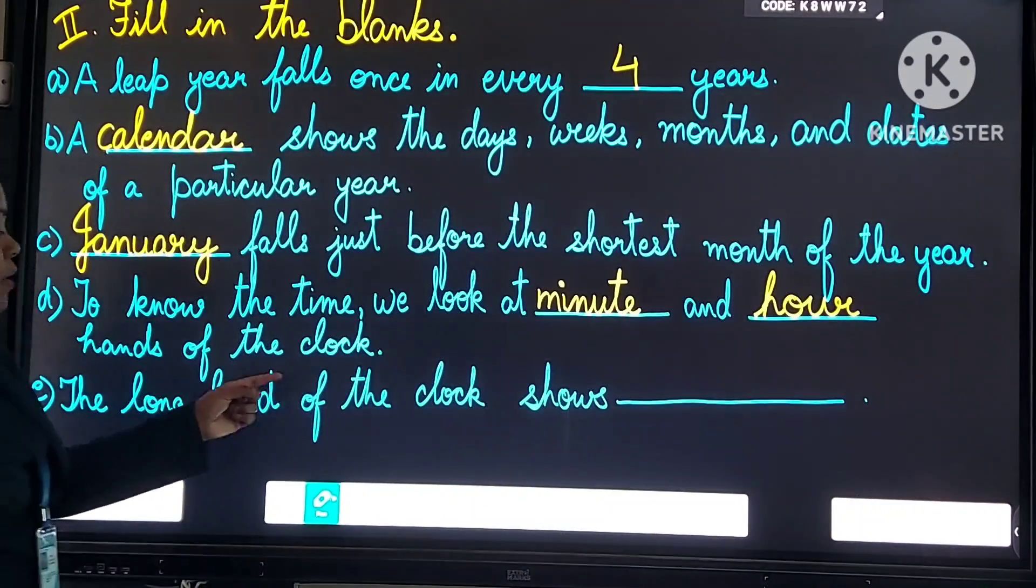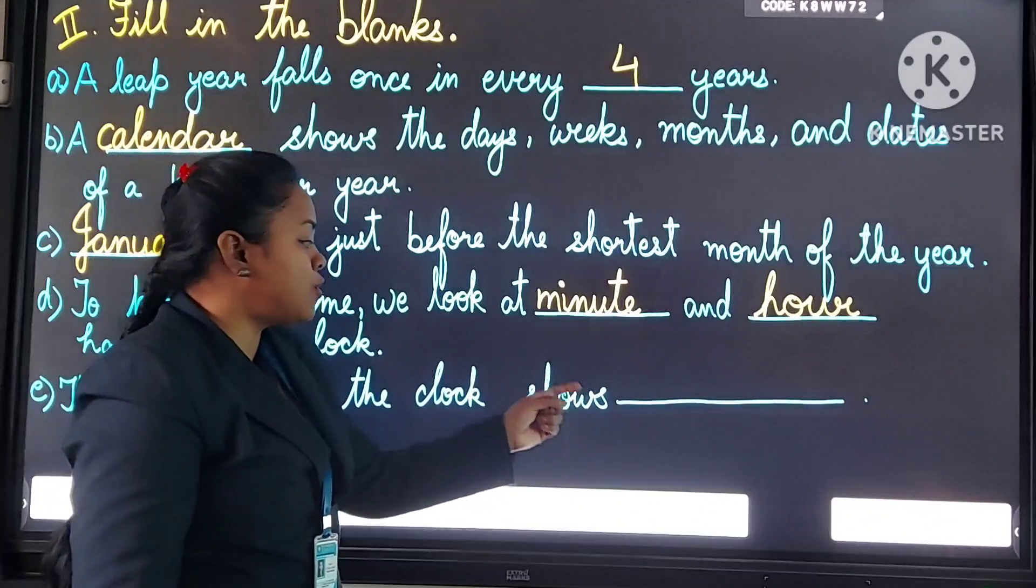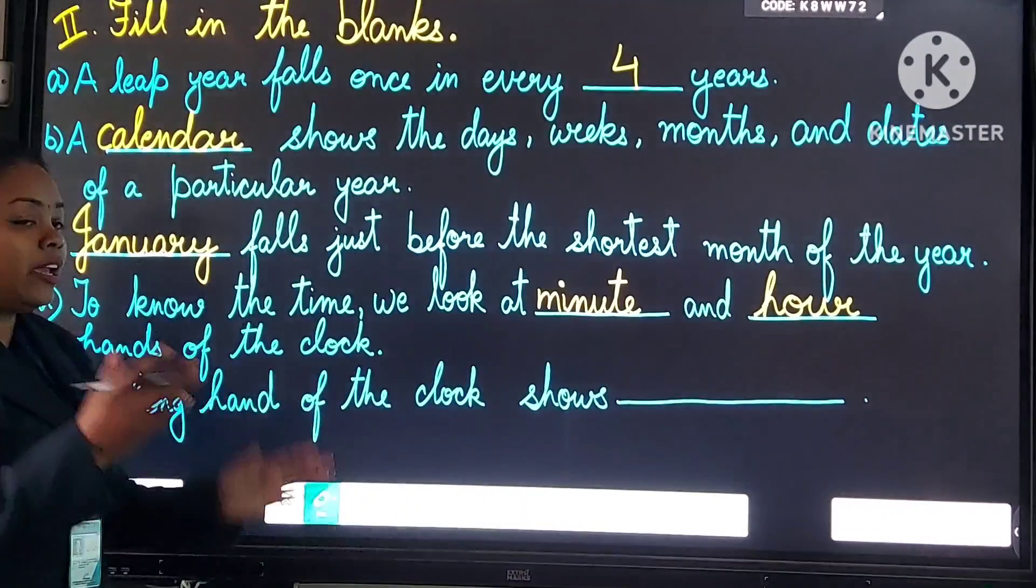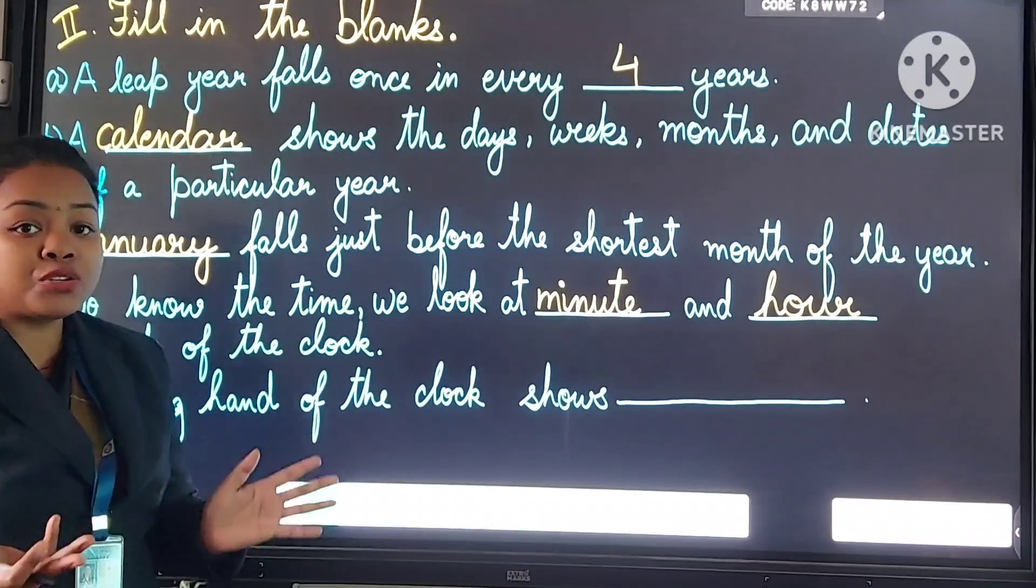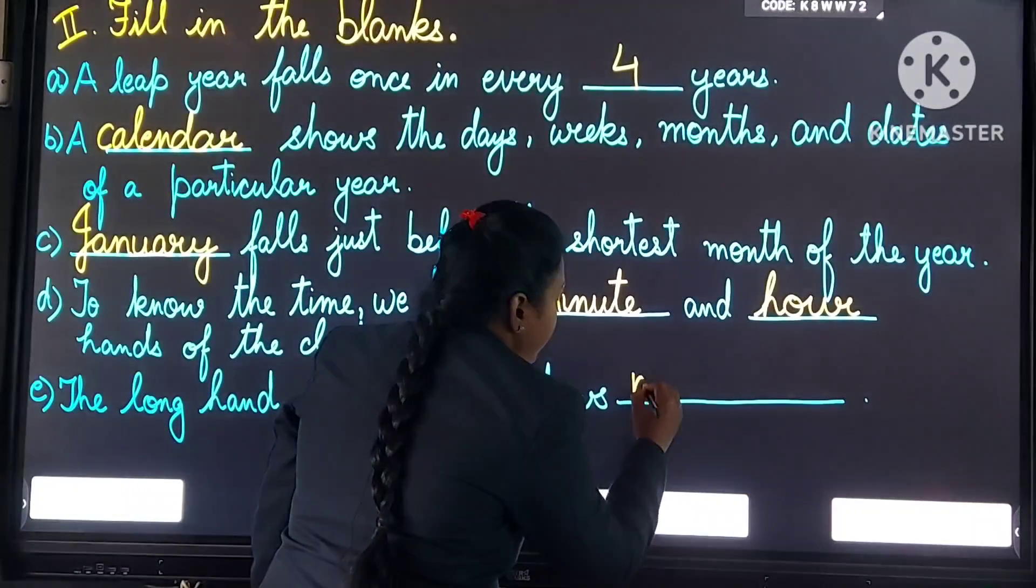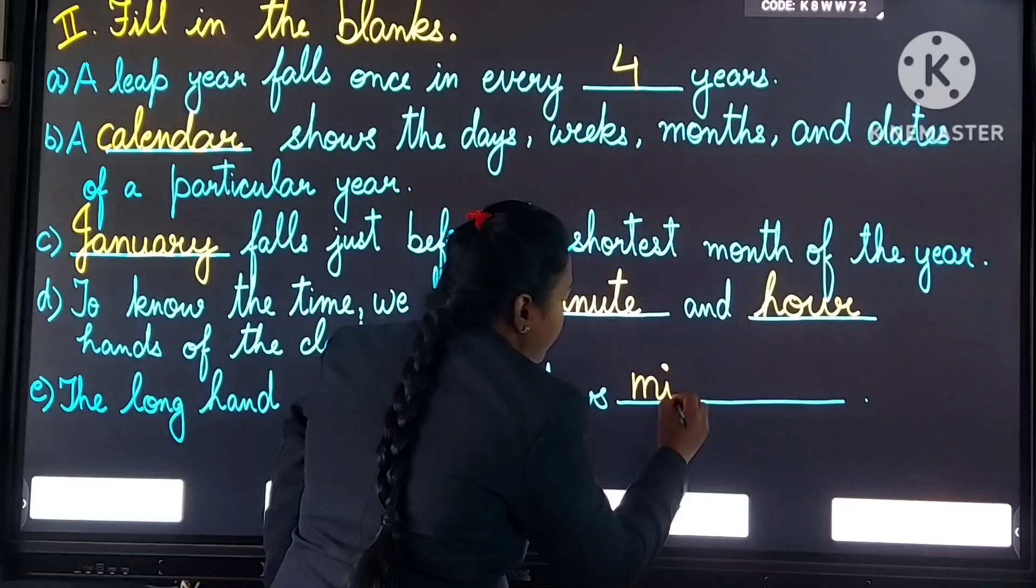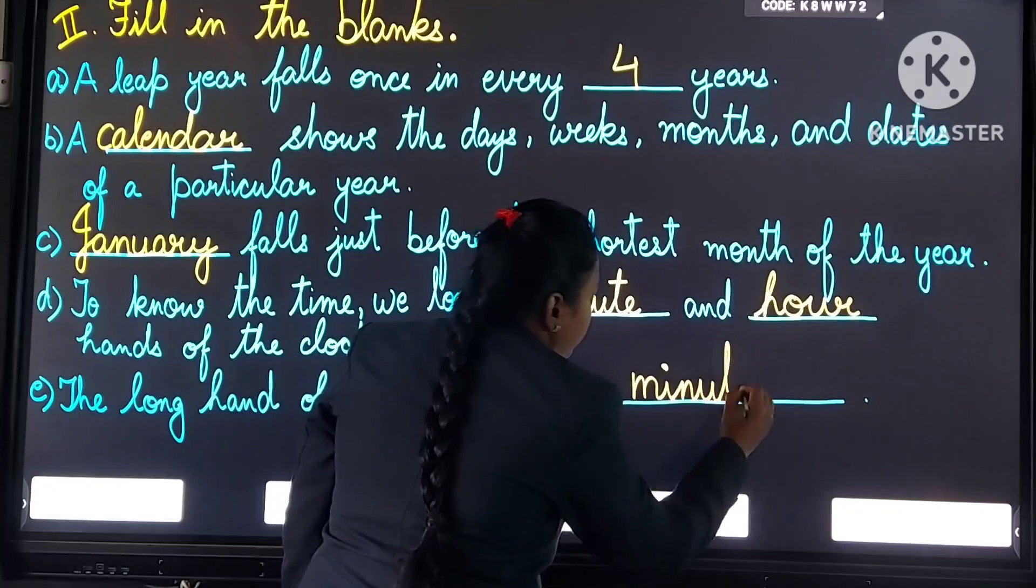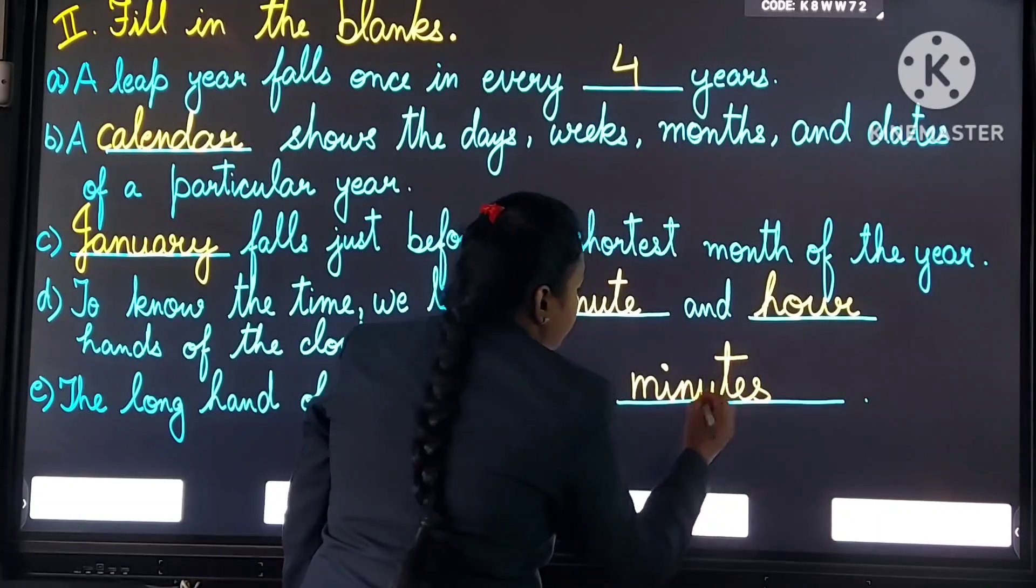Number E. The long hand of the clock shows. A clock ke long hand kya dikhata hai? Minutes. Answer is minutes. We will write this spelling: M-I-N-U-T-E-S. Minutes.